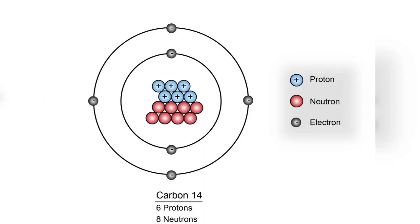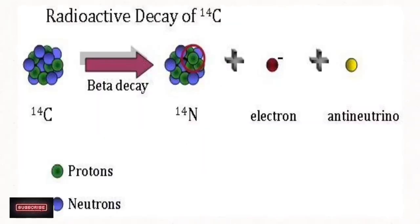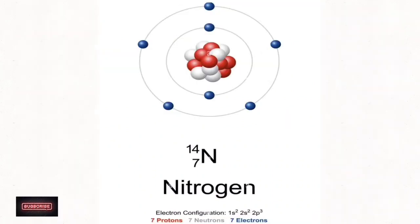Carbon-14 has 6 protons and 8 neutrons. One of those neutrons decays into a proton to make nitrogen-14, which has 7 protons and 7 neutrons. This decay happens at a predictable rate, allowing scientists to determine how old such artifacts are.